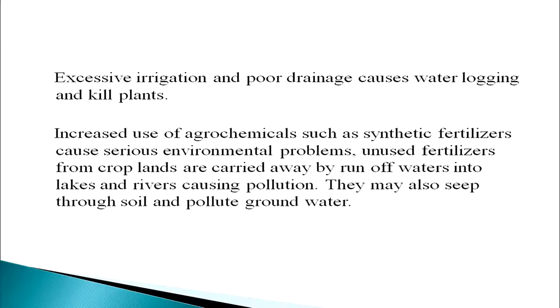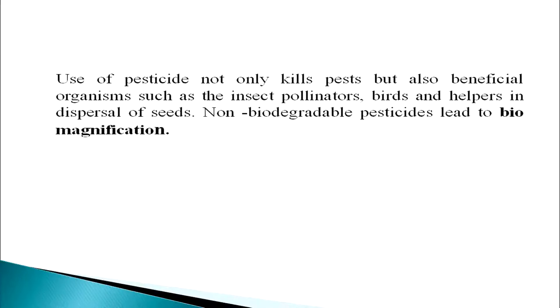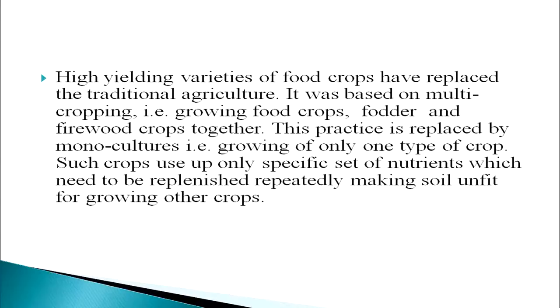Fertilizers may also seep through soil and pollute groundwater. Use of pesticides not only kills pests but also beneficial organisms such as insect pollinators, birds, and helpers in dispersal of seeds. Non-biodegradable pesticides lead to biomagnification. High-yielding variety food crops have replaced traditional agriculture, which was based on multi-cropping — growing food crops, fodder, and firewood crops together. This practice is replaced by monoculture, growing only one type of crop. Such crops use only a specific set of nutrients which need to be replenished repeatedly, making the soil unfit for growing other crops.